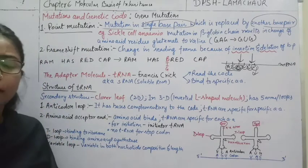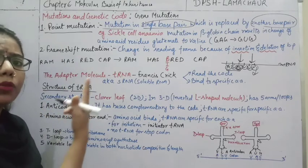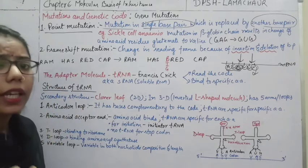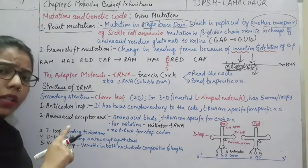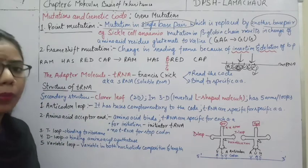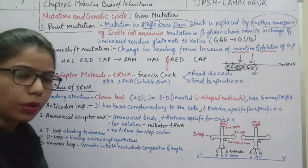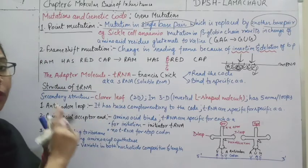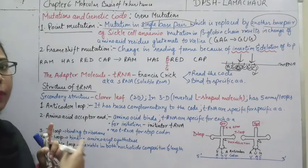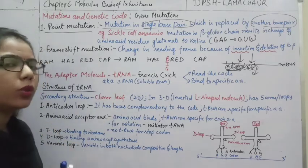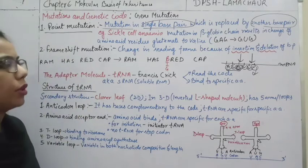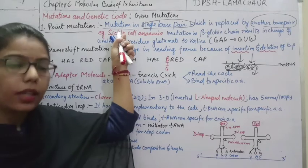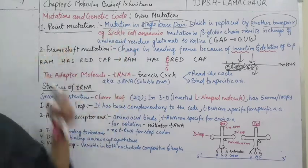In chapter 5, we discussed that point mutation can be of two types: transition and transversion. In transition, a purine gets replaced by a purine, or a pyrimidine by a pyrimidine. In transversion, a purine gets replaced by a pyrimidine, or vice versa. Both are examples of point mutation. One well-known example is sickle cell anemia.